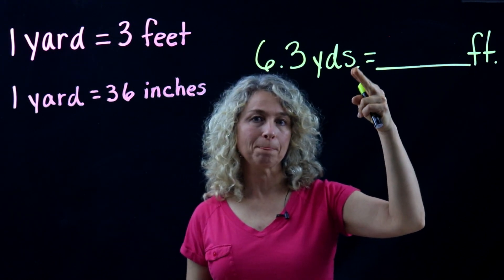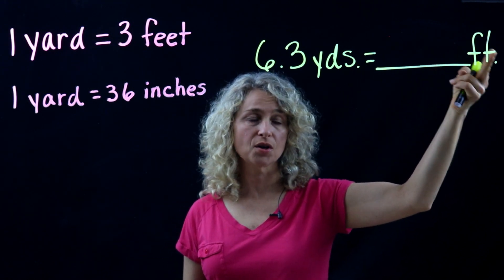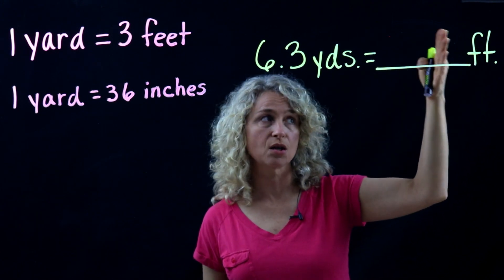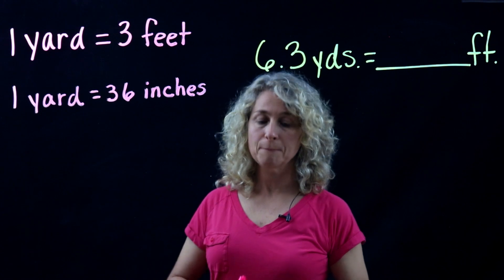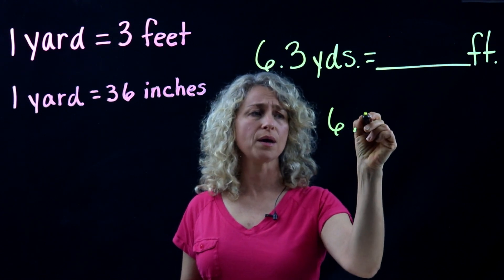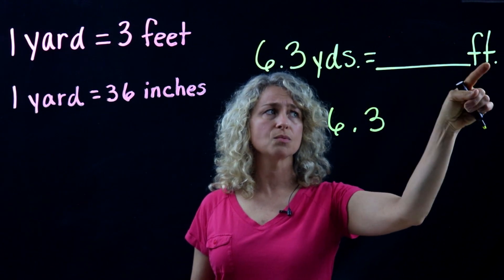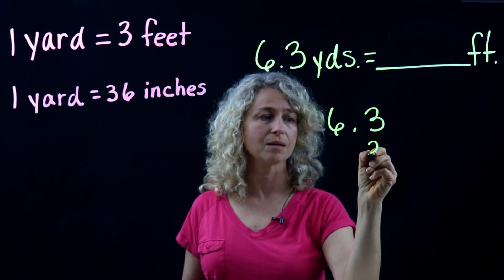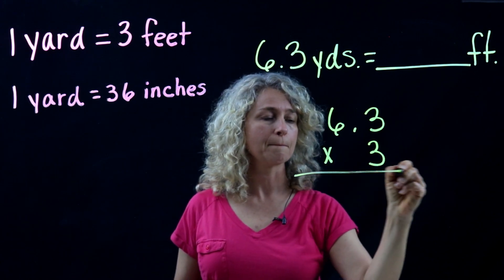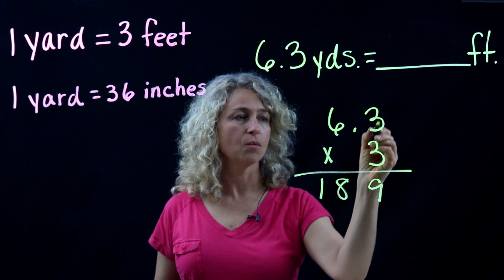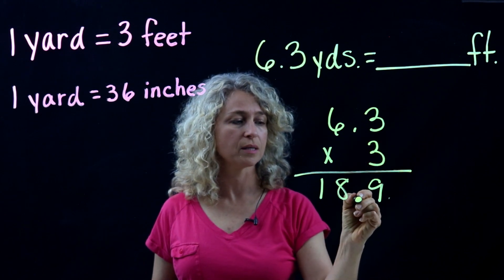All right, so if you have a decimal number, 6.3 yards, and you're converting that to feet, you're still moving from yards to feet. That's larger to smaller. You're going to multiply. So you will multiply 6.3 times what? Well, we're moving from yards to feet, so we're going to say times three and multiply.